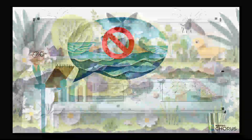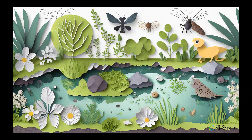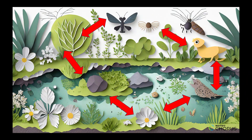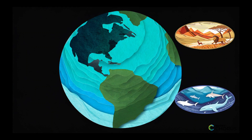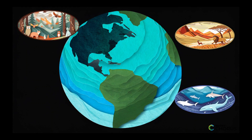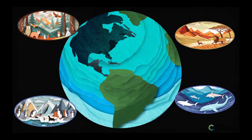By understanding how ecosystems work and how they can be protected, we can help to ensure that they continue to thrive for generations to come. Remember, changes to physical or biological components of an ecosystem can have a big effect on populations. Let's work together to protect our beautiful planet.